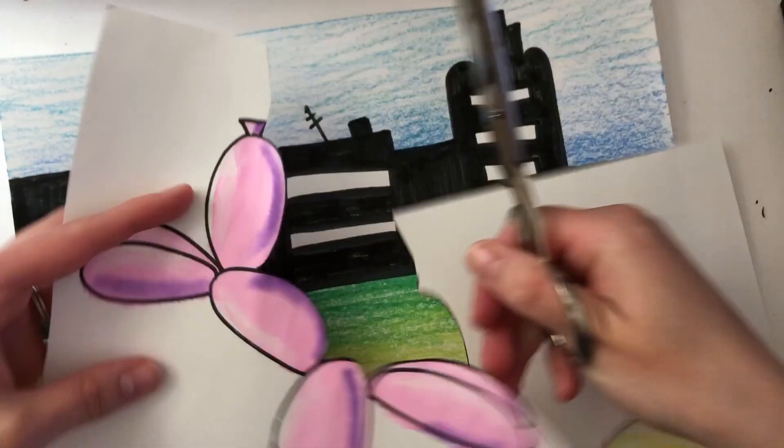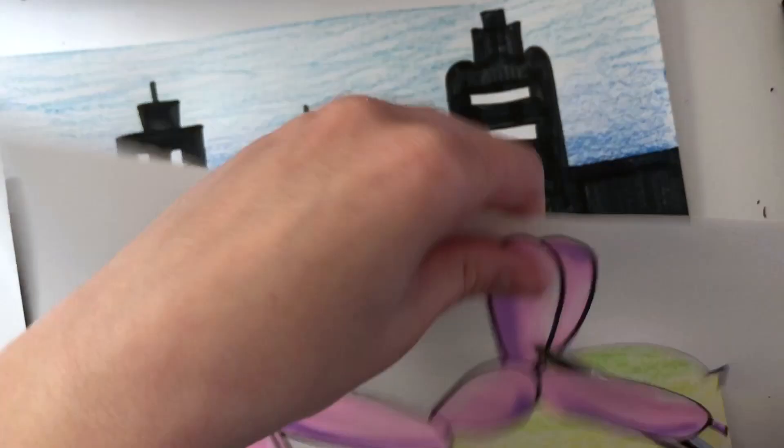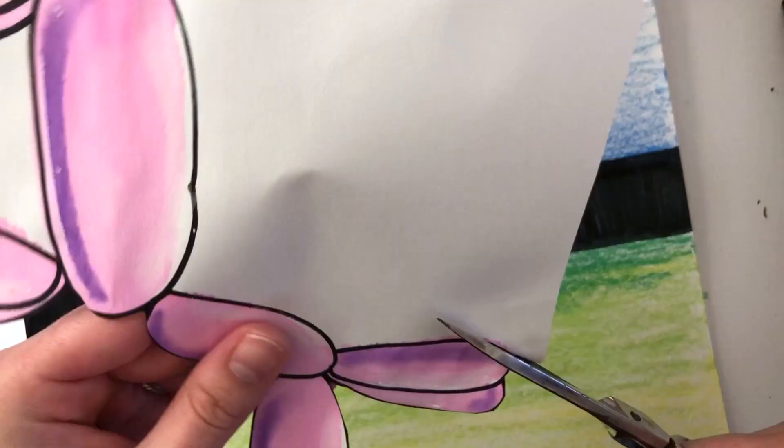You really need to cut your balloon dog out neatly, and I recommend cutting off large chunks as you go. The neater you cut it out, the more 3D your dog will look on the background.